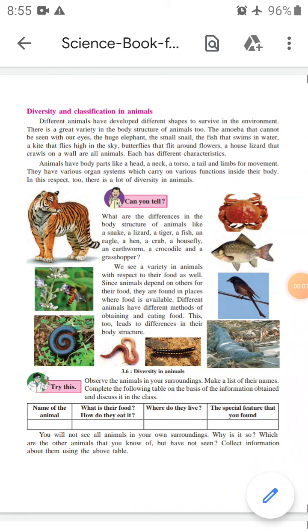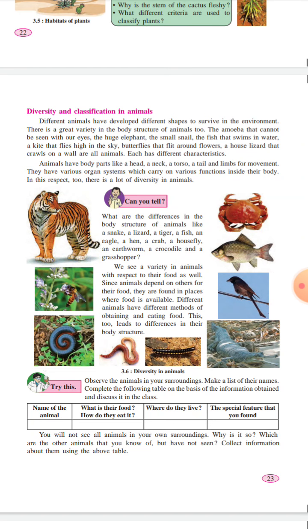Hello students, today we learn Standard Six General Science. In that, lesson number three is Diversity in Living Things and Their Classifications. In the previous video we learned diversity and classification in plants, and today we learn diversity and classification in animals.